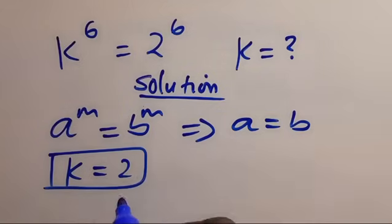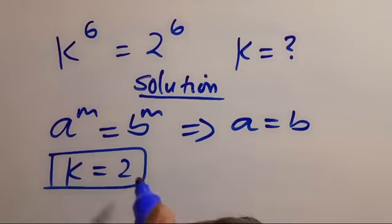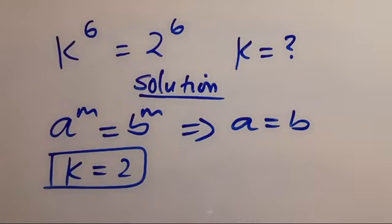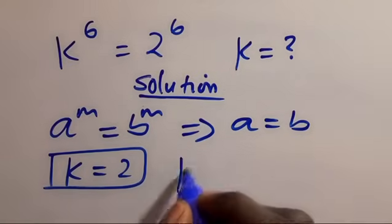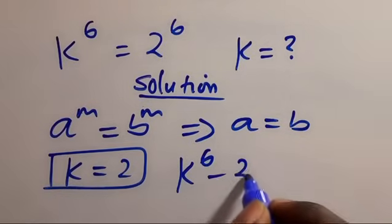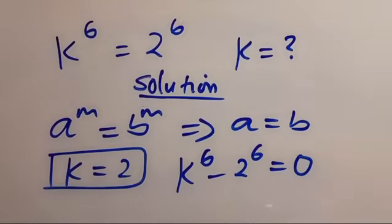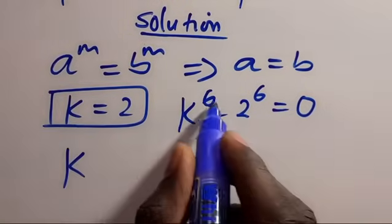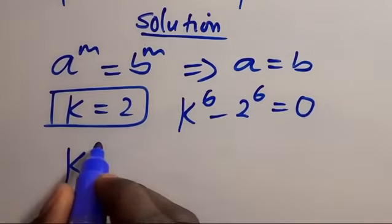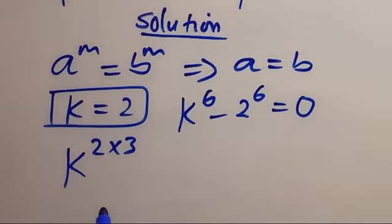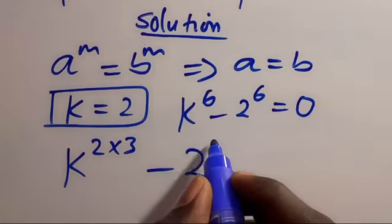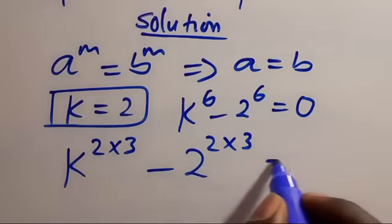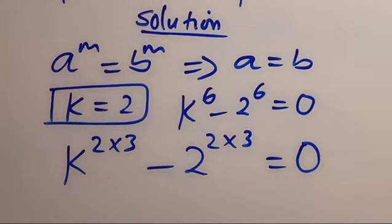But the value of k — the solution for k — is more than just 2. So now let's see: we have k to the power of 6 minus 2 to the power of 6 equals 0. From here, to get other possible solutions, we can resimplify 6 as 2 times 3, giving us k to the power of 2 times 3, minus 2 to the power of 2 times 3, equals 0.